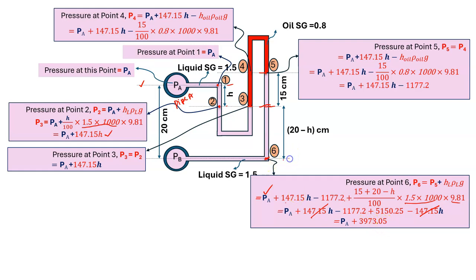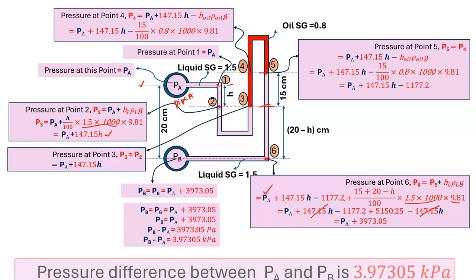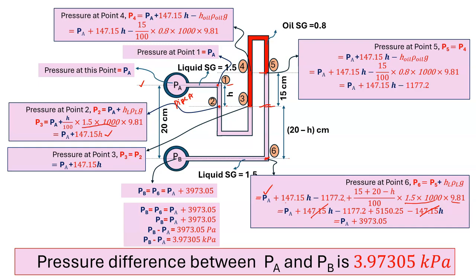Drawing a horizontal line from point 6 to the center of pipe B, pressure is the same for the same fluid at the same horizontal level. Therefore PB equals P6 equals PA plus 397.305. Rearranging, PB minus PA equals 397.305 Pascals. That's the final answer.